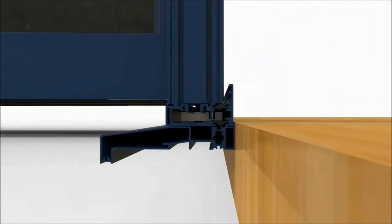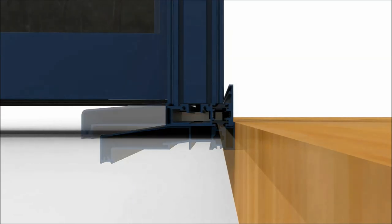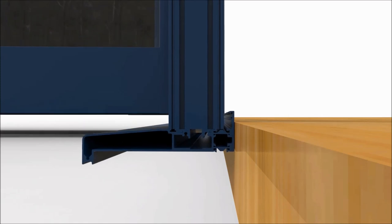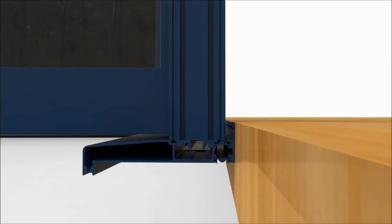Traditional patio systems utilize sills which can make a step between the inside and outside of your home. We've developed an integral sill which combines with the bottom track to lower the section, allowing a seamless joint with your internal floor level.